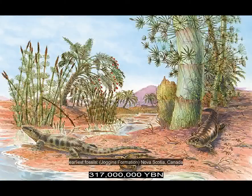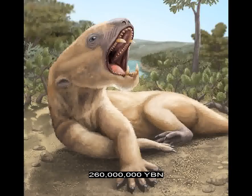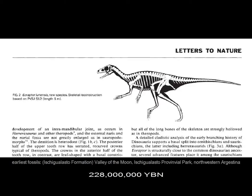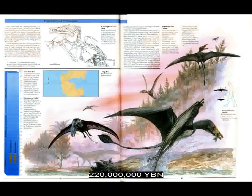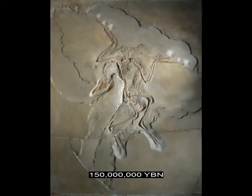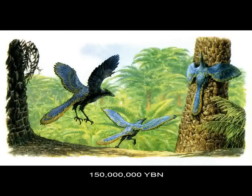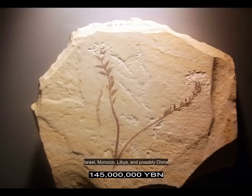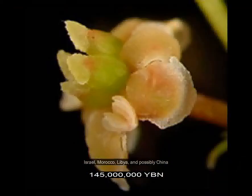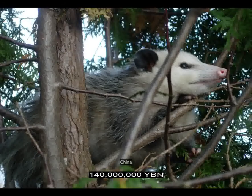Reptiles. Warm-blooded hair-growing animal. Dinosaurs. Mammals. First flying vertebrate — pterosaur. Birds evolve. First feather. First flowering plant. Fruits, nuts, vegetables. Marsupials.